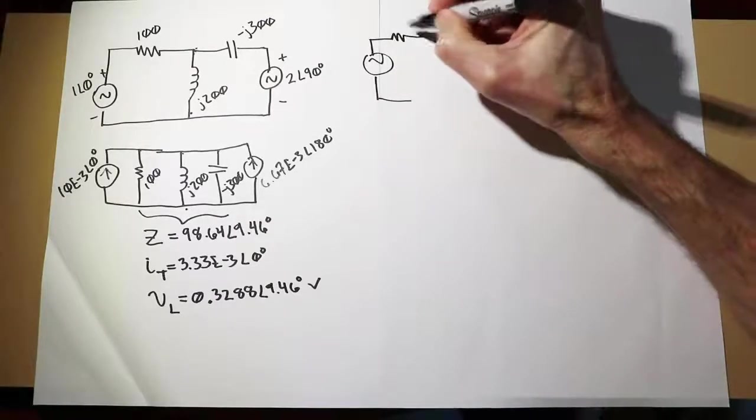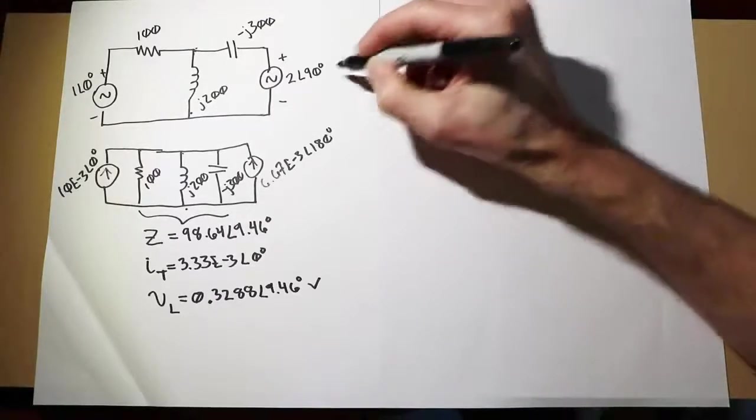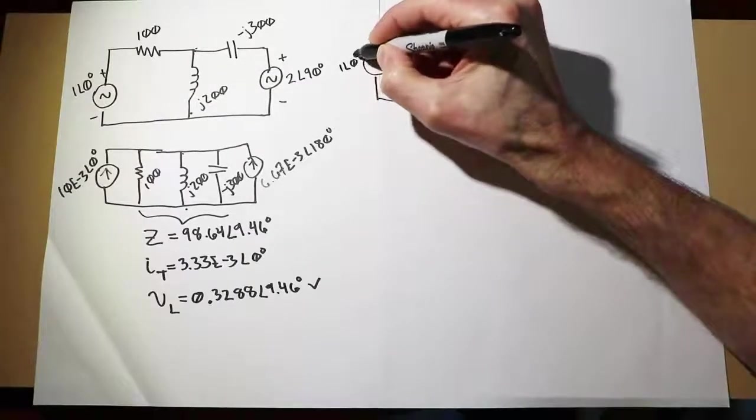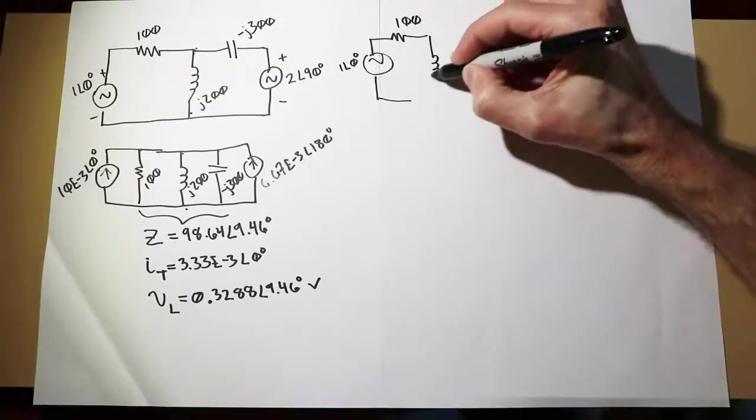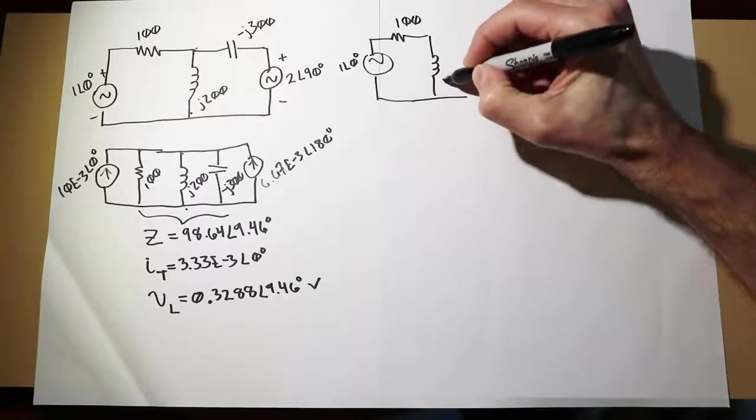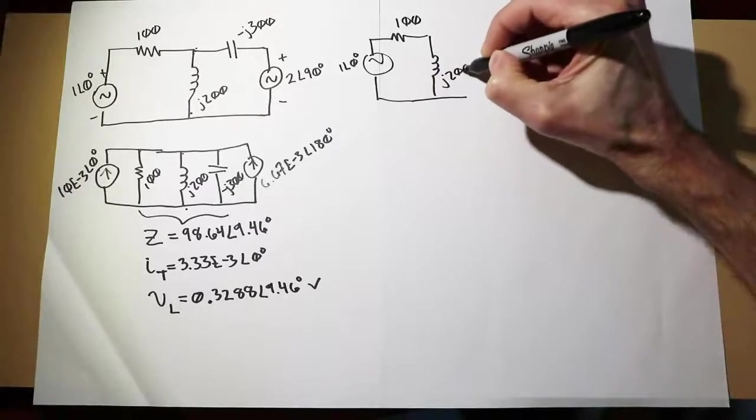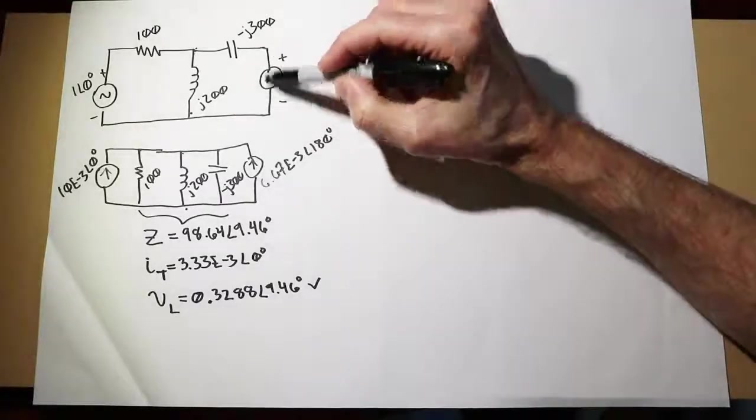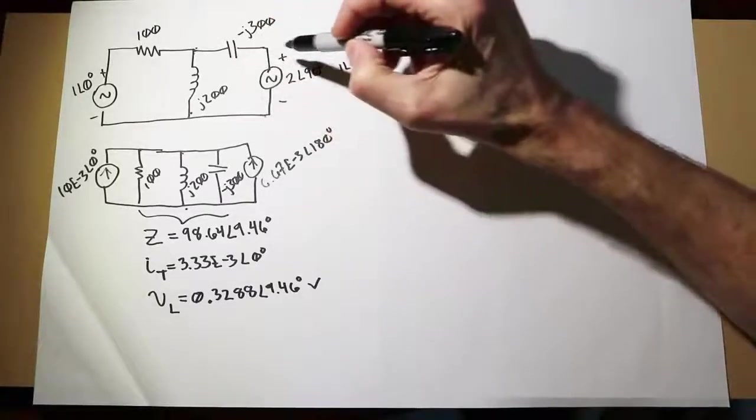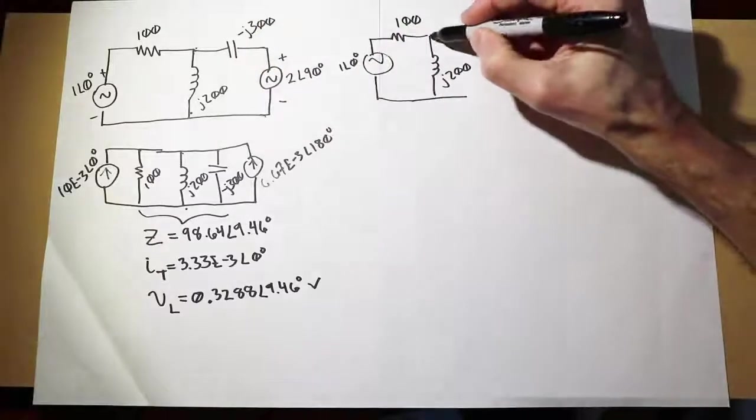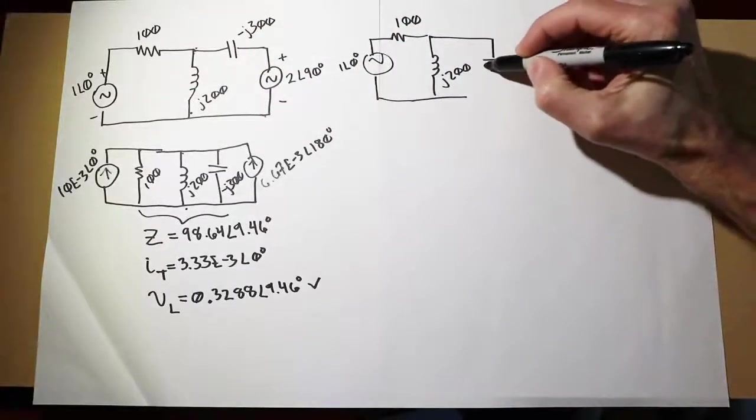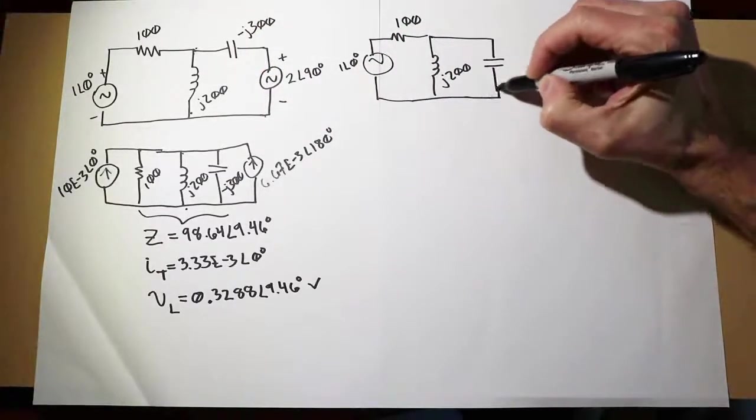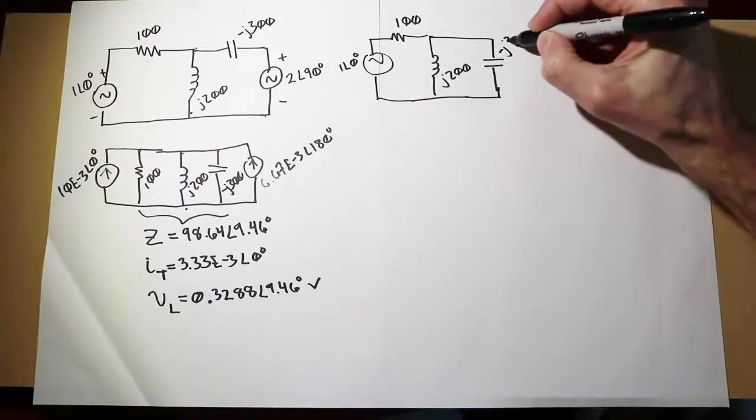That feeds the 100 over here. Here's the inductor coming down. The second source is going to be replaced with its ideal internal impedance, a short. So this point is basically shorted to here, which means that capacitor is essentially in parallel with the inductor.